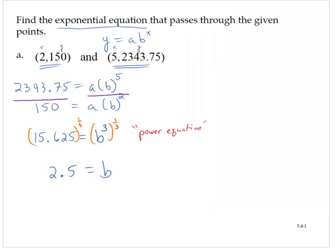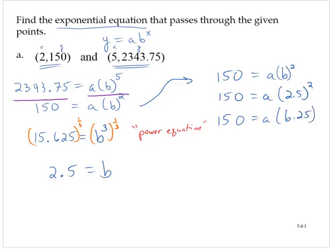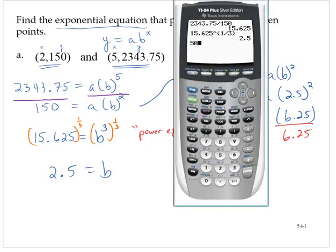We have one of the parameters of the model. We have the b value. Now we need the a value. We go back to either one of the original equations. I'm going to use the easier one with smaller numbers. 150 equals a times b to the second. Now that I know b is 2.5, I have 150 equals a times 2.5 to the second. So 150 equals a times 6.25. Dividing by 6.25, a is 24.